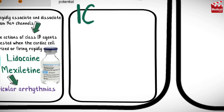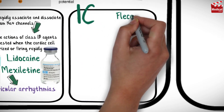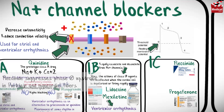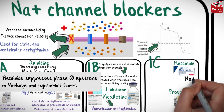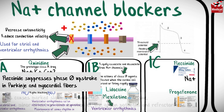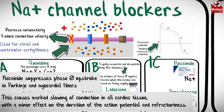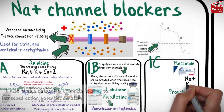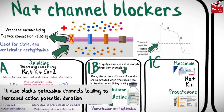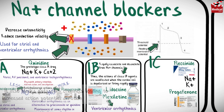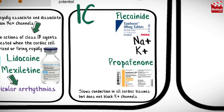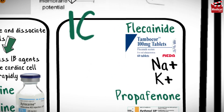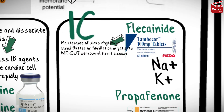Class 1c includes flecainide and propafenone. Flecainide suppresses phase 0 upstroke in Purkinje and myocardial fibers, causing marked slowing of conduction in all cardiac tissue with a minor effect on action potential duration and refractoriness. It also blocks potassium channels, leading to increased action potential duration. Propafenone also slows conduction in all cardiac tissues but does not block potassium channels.